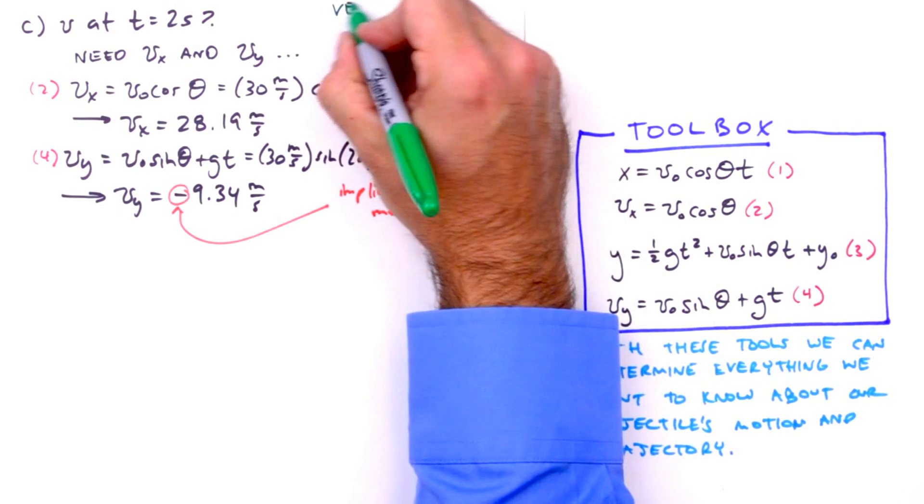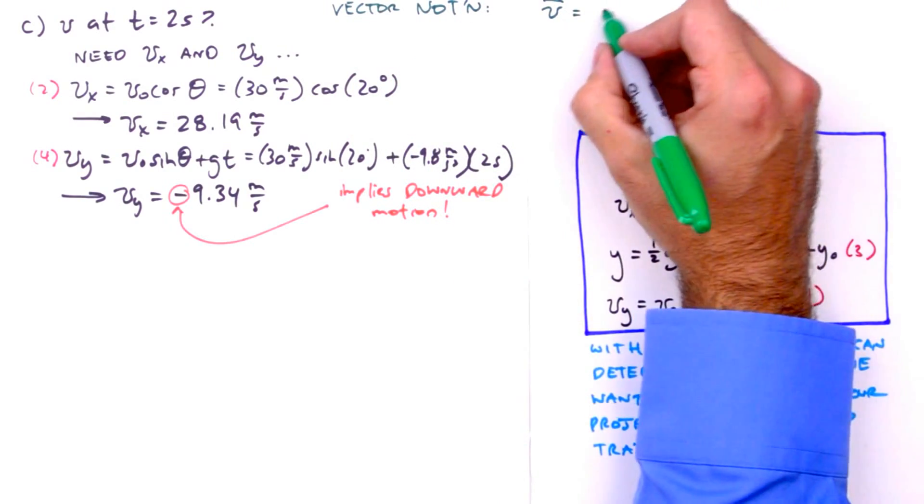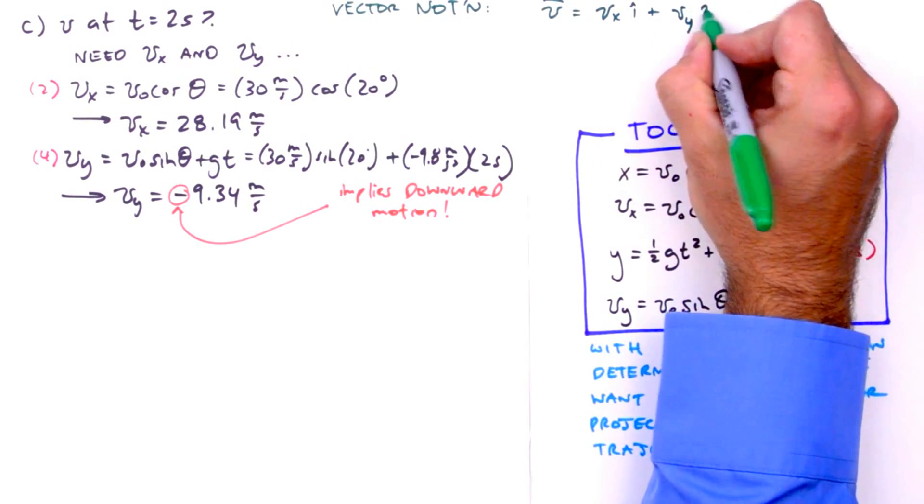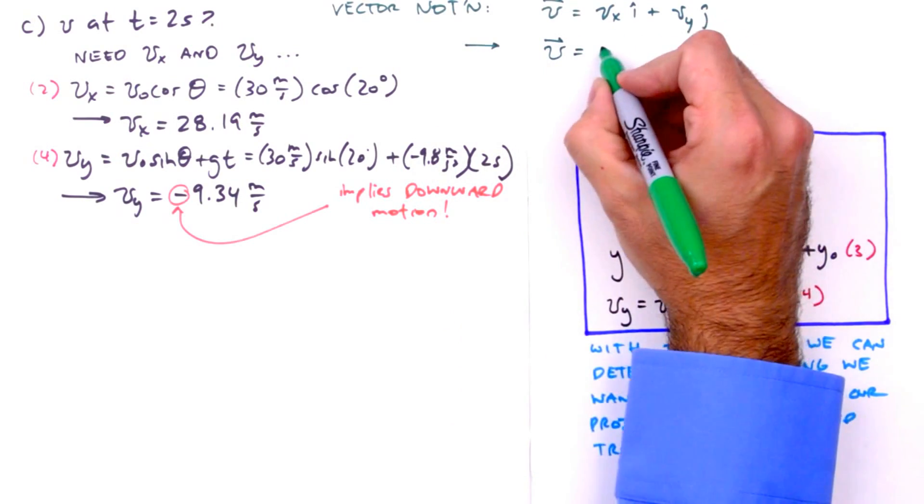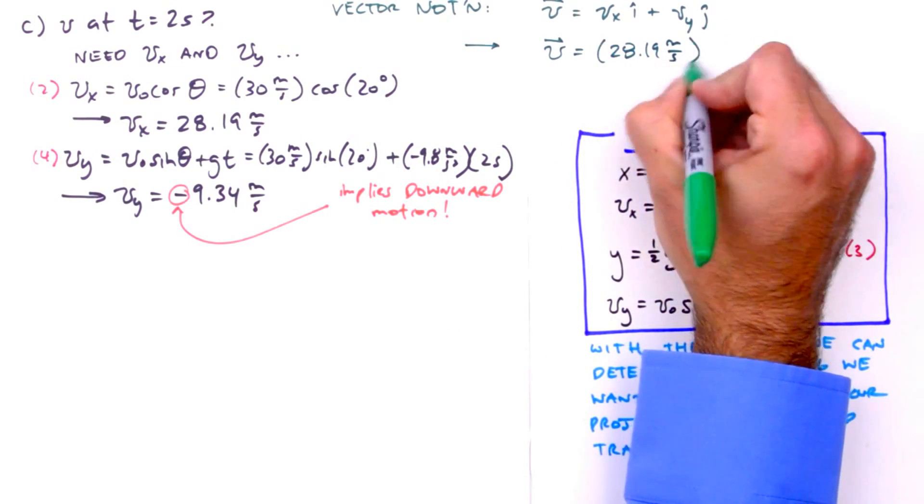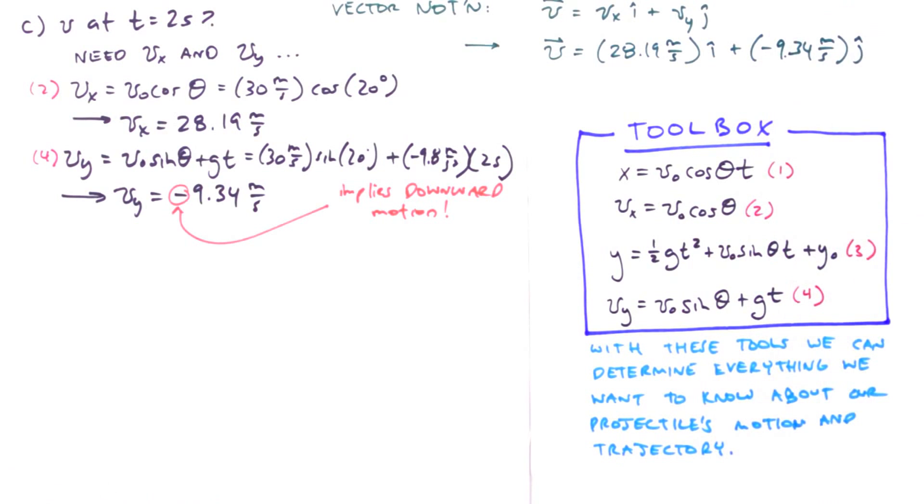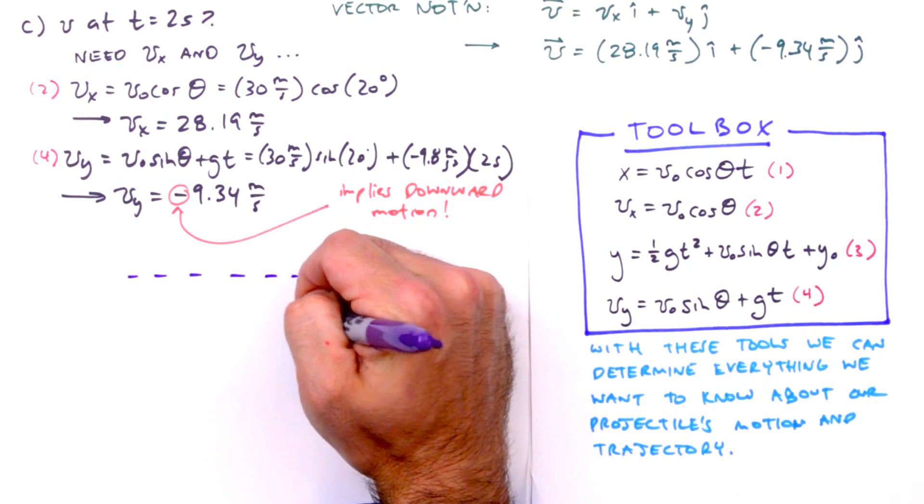Now at this point we could write our solution in vector notation, where the velocity vector is equal to the magnitude of the velocity's x component times the unit vector i hat, plus the magnitude of the velocity's y component times the unit vector j hat. That would give us the solution v equals 28.19 meters per second i hat plus negative 9.34 meters per second j hat. Which is fine and dandy, but let's go ahead and determine the magnitude and direction of this velocity vector.